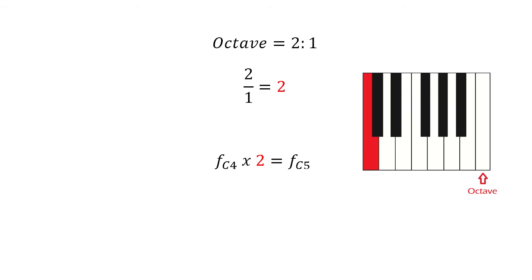For example, the octave has a ratio of 2 to 1, which can be expressed as the fraction 2 over 1. If we solve it, 2 divided by 1 equals 2. So if we have the frequency of C4 and we multiply it by 2, we get C5. This is the only ratio that's identical in both just intonation and equal temperament.